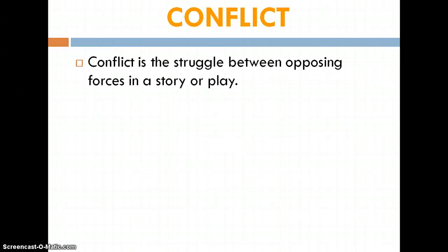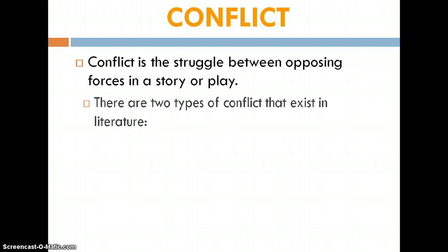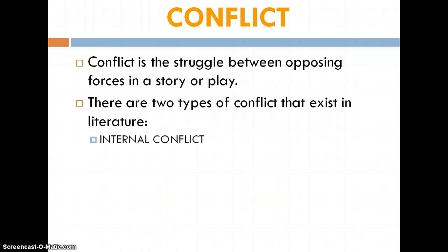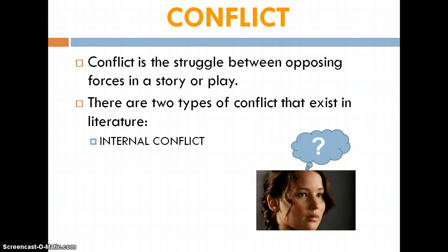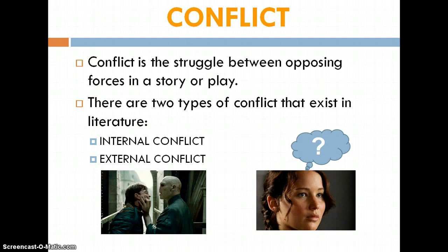Then there's conflict — the struggle between two opposing forces in a story or play. It doesn't have to be two characters; if one character is out in the elements in a snowstorm, that's two opposing forces. There are two types of conflict: internal conflict, where one character is wrestling with something in their mind — what decision to make — and external conflict. External conflicts can be physical, but they can also be a battle of words, like an argument. That's still external because it's outside the mind of one character.